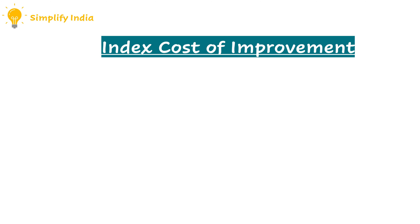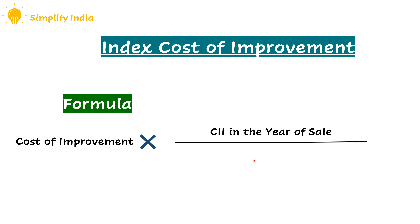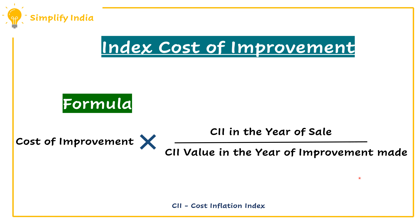Next, we have the formula for computation of index cost of improvement. That is: cost of improvement multiplied by CII value in the year of sale, divided by CII value in the year of improvement.